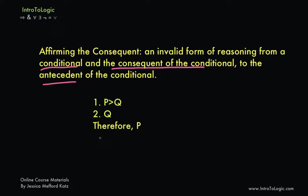Here we have the basic form of affirming the consequent. First you need a conditional, and then you take the consequent of that conditional — which in this case is q — and you try to derive the antecedent of the conditional, which is p.